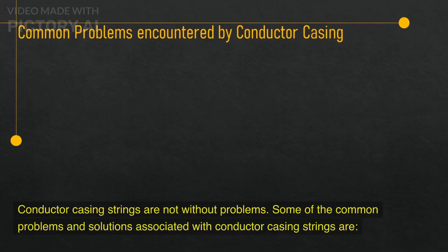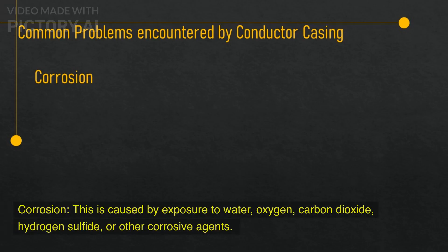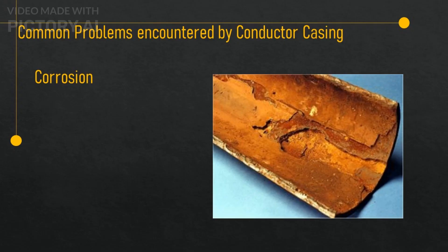Conductor casing strings are not without problems. Some of the common problems and solutions associated with conductor casing strings are: Corrosion — this is caused by exposure to water, oxygen, carbon dioxide, hydrogen sulfide, or other corrosive agents. Corrosion can weaken or perforate the casing wall, leading to leaks or failures. Corrosion can be prevented or reduced by using corrosion-resistant materials, coatings, inhibitors, or cathodic protection.